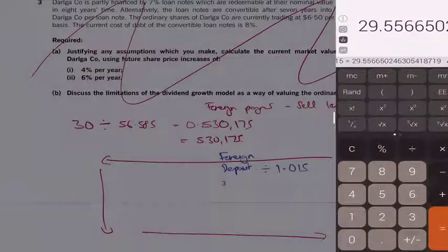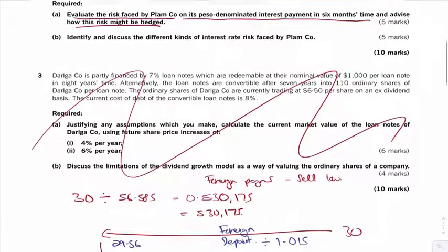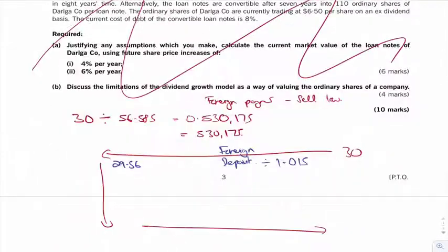29.56, we'll call it. Then we'll take the spot rate so again it's the low rate spot rate 58.335